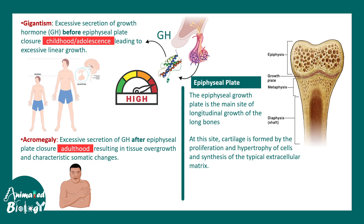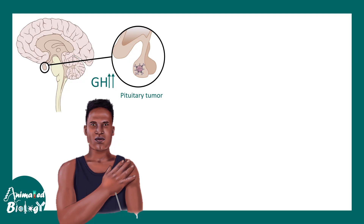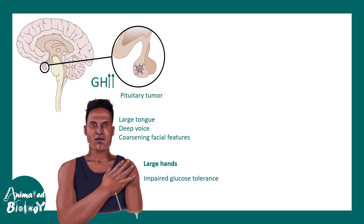Our focus in this video is acromegaly. In acromegaly, the increase in growth hormone secretion may be due to a pituitary tumor, leading to too much growth hormone secretion. These individuals have characteristic features of an extended jaw and a very distinct jawline, a large tongue, a deep voice, coarsening facial features that become more prominent with age, large hands, impaired glucose tolerance, and abnormally high IGF levels in the blood.